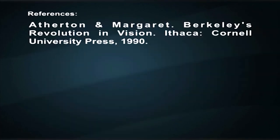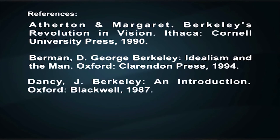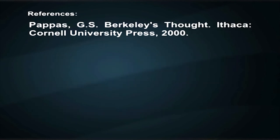Berkeley's Revolution in Vision, written by Atherton and Margaret, published by the Cornell University Press in 1990. George Berkeley, Idealism and the Man, by David Berman, published by Clarendon Press, 1994. Berkeley, An Introduction, by Jonathan Dancy, published by Blackwell Publications, 1987. Berkeley's Ontology by R. G. Muehlmann, published by Hackett in 1992. Berkeley's Thought by G. S. Pappas, published by Cornell University Press, 2000.